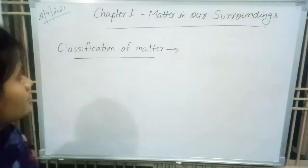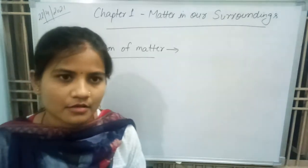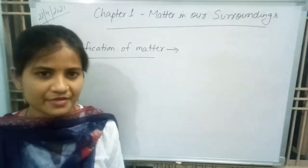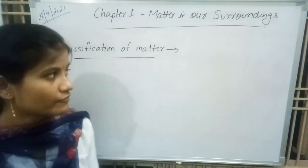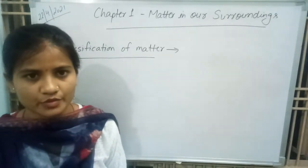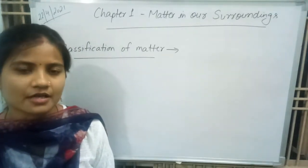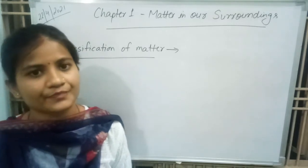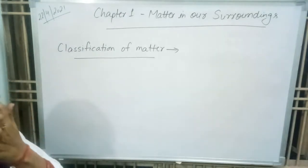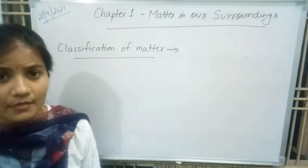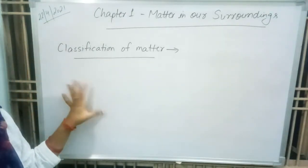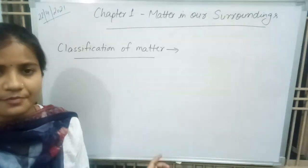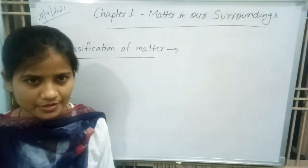Classification of matter. Early Indian philosophers classified matter into five basic elements — this is called Panchatattva. These five basic elements are air, water, sky, earth, and fire. According to them, every living and non-living thing is made up of these five basic elements.